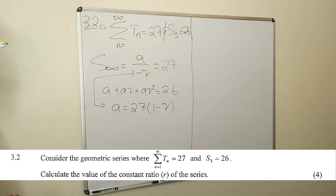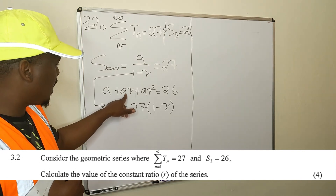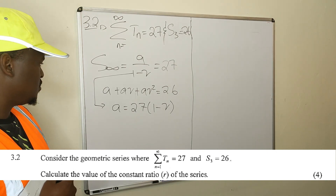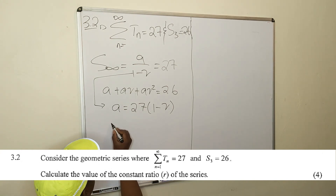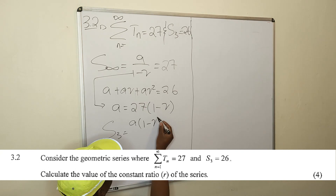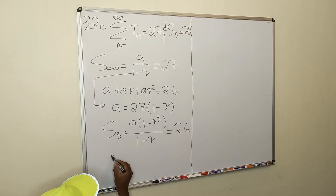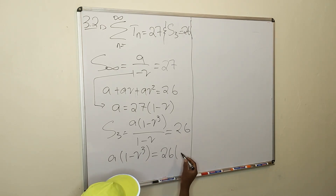We cross-multiply to get a = 27(1−r). This is our expression for a. Now we also use the sum of the first three terms formula: a × (1−r³)/(1−r) = 26. This simplifies to a × (1−r³) = 26 × (1−r).